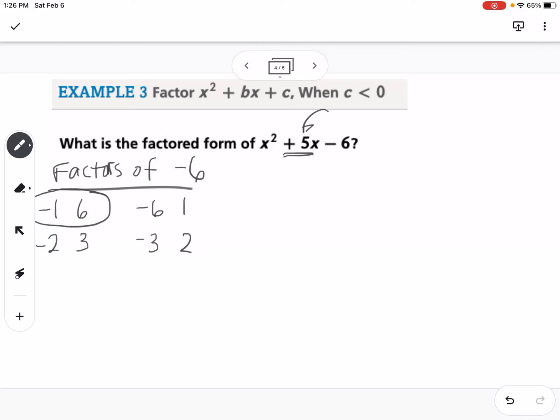So I want them to add to a positive 5, so that would have to be this pair right here. Because negative 1 plus 6 equals positive 5. So I'm going to write this as x minus 1 times x plus 6.